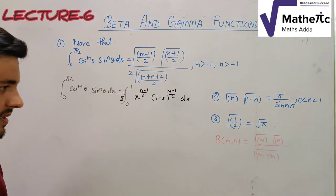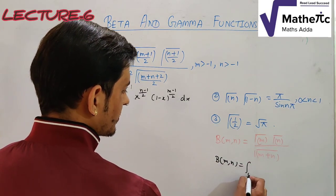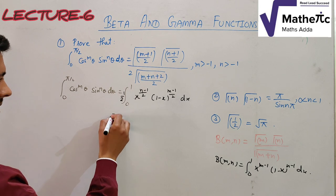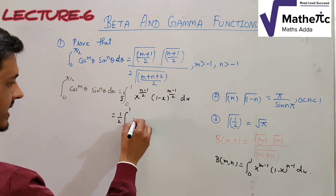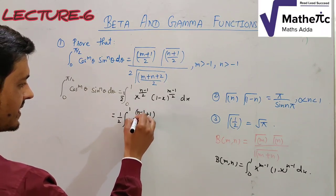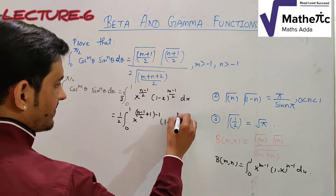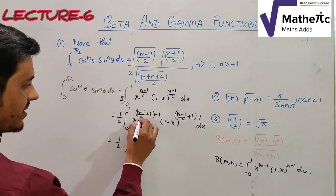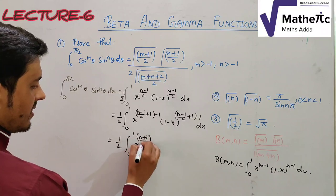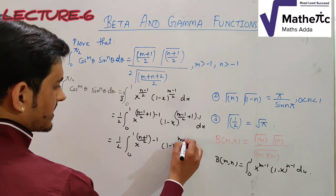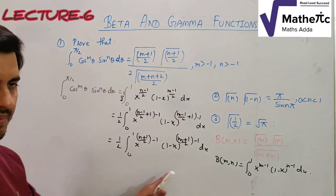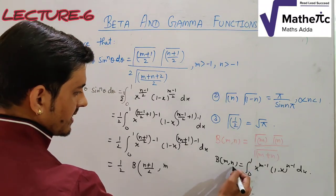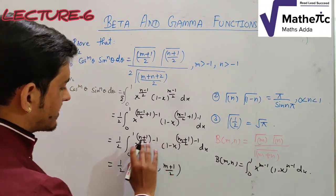Now recall the beta function definition: β(p,q) = ∫₀¹ x^(p−1)(1−x)^(q−1) dx. Our integral matches this form exactly, giving (1/2)·β((n+1)/2, (m+1)/2). This completes the recognition of the beta function.